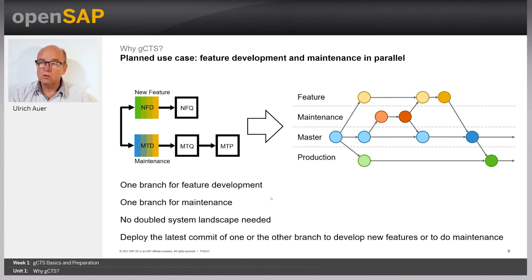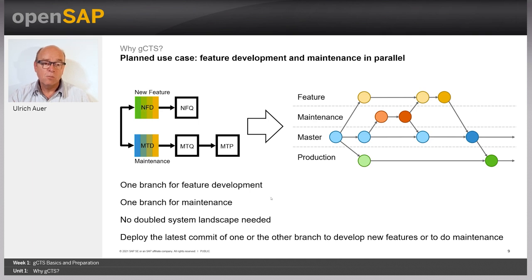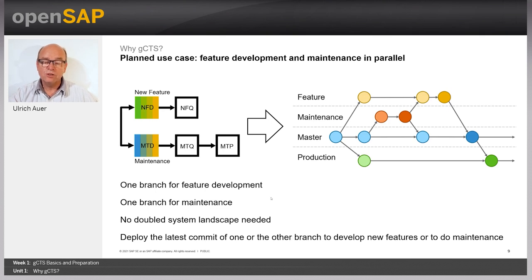You can switch the system to a maintenance branch, make a small correction, commit it, push it, merge it to the master branch, check it, test it, and then merge it to the production branch. Afterwards, you switch the development system to the feature branch again and continue with development work. This lets you leverage Git's merge and branch features for applying a bug fix across several code lines.